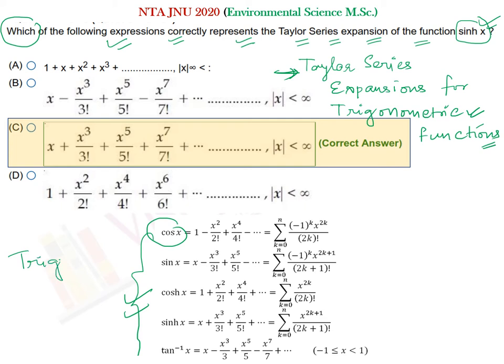Trigonometric functions have a Taylor series expansion. One particular thing you will notice is that all of these involve factorials. If you see an option without a factorial, you can eliminate it — that will not be your answer.